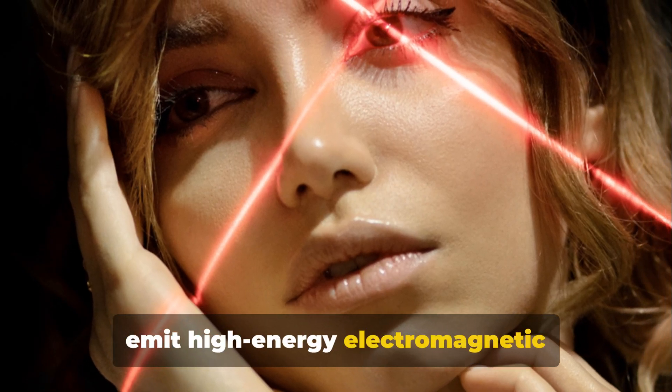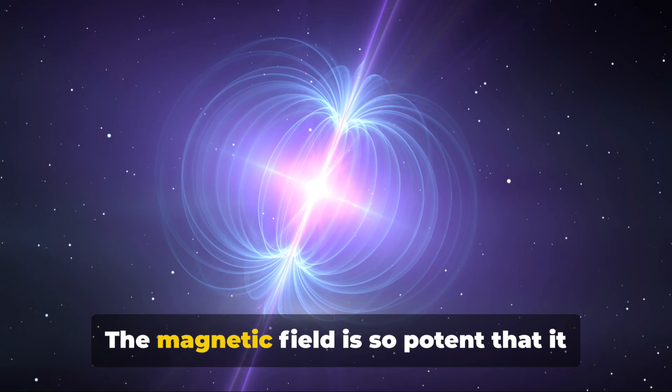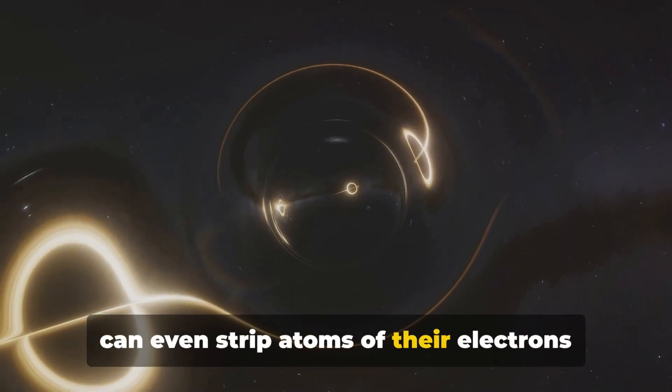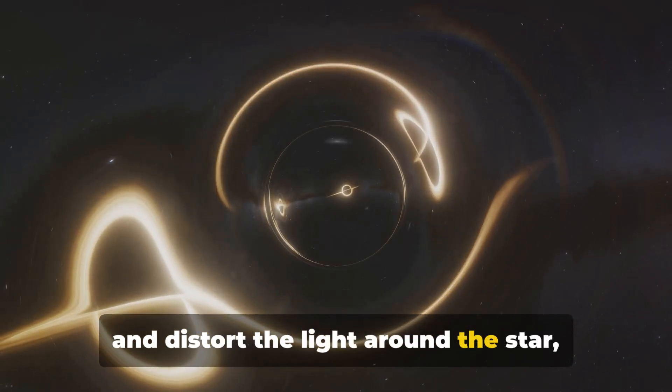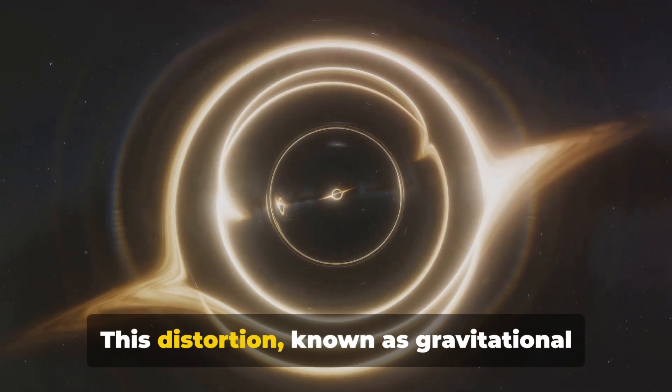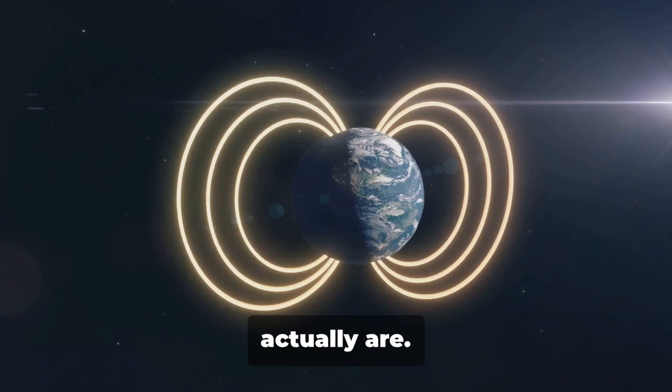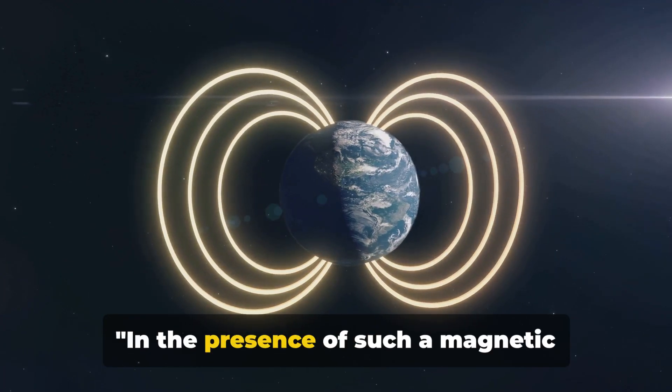The magnetic field is so potent that it can even strip atoms of their electrons and distort the light around the star, creating an awe-inspiring spectacle. This distortion, known as gravitational lensing, can often make neutron stars appear brighter and larger than they actually are. In the presence of such a magnetic field, ordinary physics as we know it gets tossed out the window.